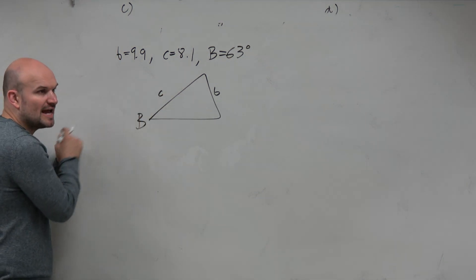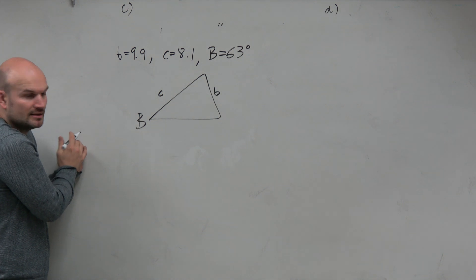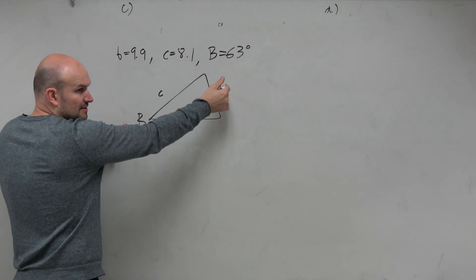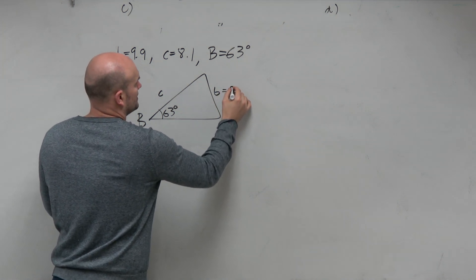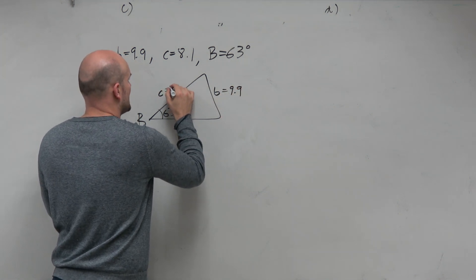Does that make sense? I know that's where A used to be, but again, nothing's fixated. Here's my angle, here's the side length. So this is 63 degrees, this is 9.9, and this is 8.1.